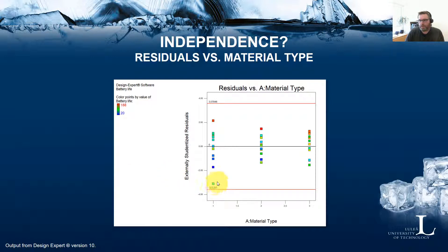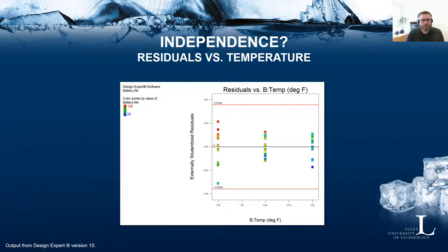You will see that this deviating observation comes back in many of the plots. Another check is residuals versus temperature. The same here — it looks quite okay in terms of variability of the residuals between the different levels, and once again we have this deviating residual appearing.